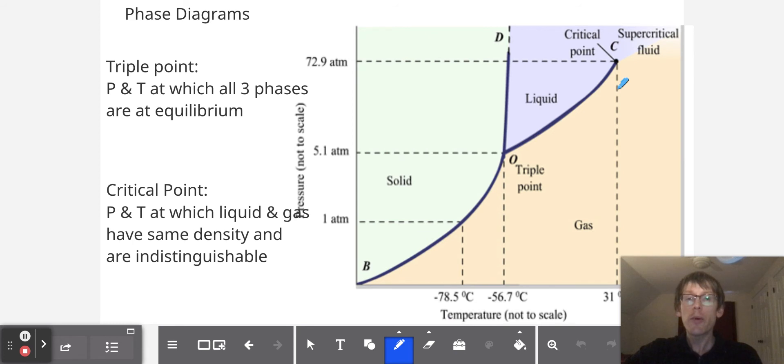There are a couple points here that are worth noting, and one is called the triple point. The triple point is where all three phases, solid, liquid and gas, are at equilibrium with one another. This will be a point with both an x and a y value, so that means there is a temperature and a pressure at which all three phases are in equilibrium with each other.